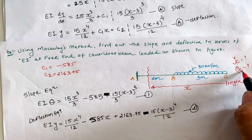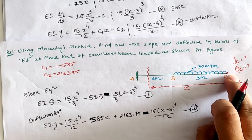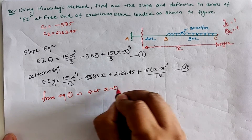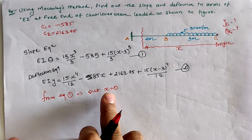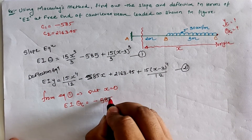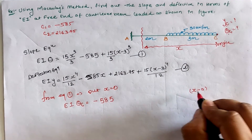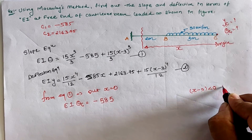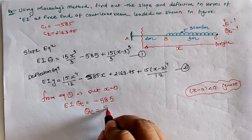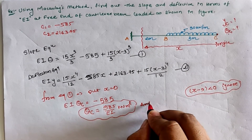To find slope at location C, we put x = 0 in equation 1. The first term 15(0)³/3 = 0; the constant gives −585; and for (x − 3) = (0 − 3) = −3, which is less than zero — by Macaulay's method we ignore this term. Therefore EI·θ_C = −585, giving θ_C = 585/EI kNm². The negative sign indicates the slope is in the anti-clockwise direction.